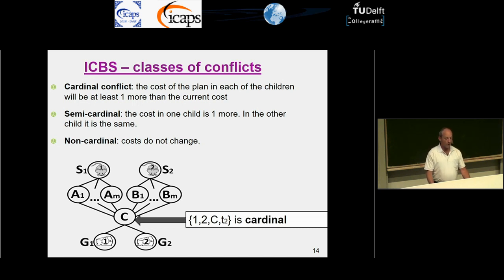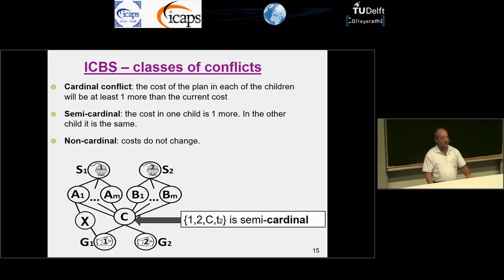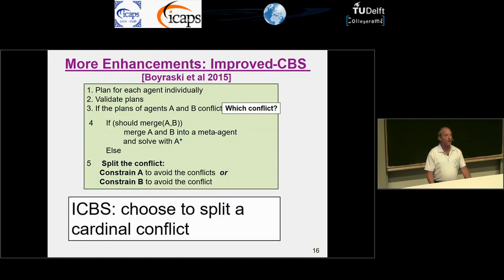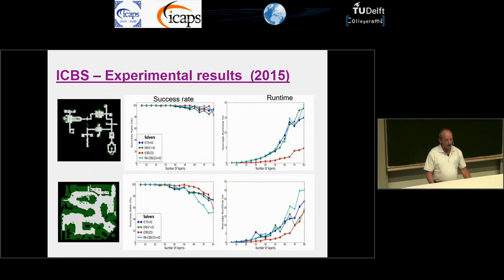A cardinal conflict is where the cost of the plan in each of the children must be at least one more than the current cost. For example, the conflict at location C is cardinal because one of the agents for sure will have to do one more step in either child. A semi-cardinal conflict is one where only one child incurs the cost increase — only one agent has to increase the cost. The idea for prioritization is: if we have many conflicts, choose to split on a cardinal conflict, because it is a hard conflict we must split at some point. This is a very fast glance at the experimental results on ICBS — it's the red line and performs much better than previous algorithms, both in the CBS family and others.